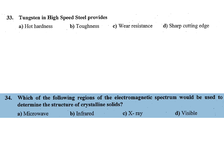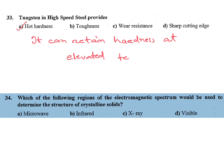Next: tungsten in high speed steel provides A) hot hardness, B) toughness, C) wear resistance, D) sharp cutting edge. By addition of tungsten in high-speed steel, we can get hot hardness. That is the answer.